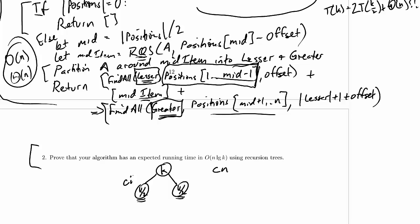If the lesser array is of length i, how long is the greater array? Well, the greater array is everything except what's in lesser and the middle item. So it is something like c times n minus i minus 1. Now when we add those together, we end up with ci plus c times n minus i minus 1, which is cn minus 1,